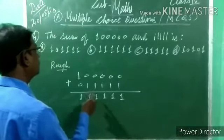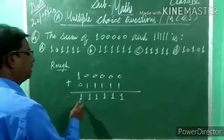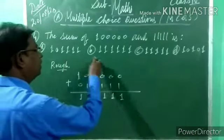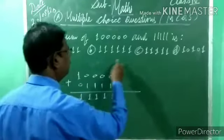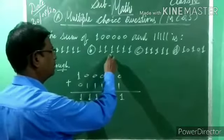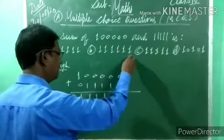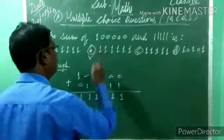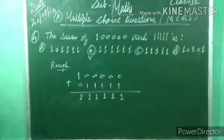So option B — one lakh eleven thousand one hundred eleven. Put right for B.